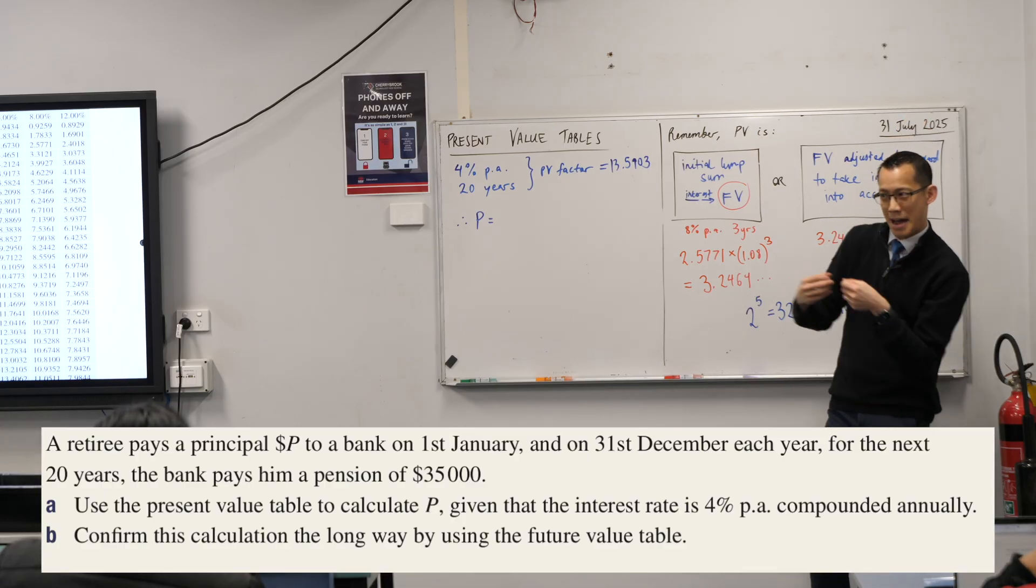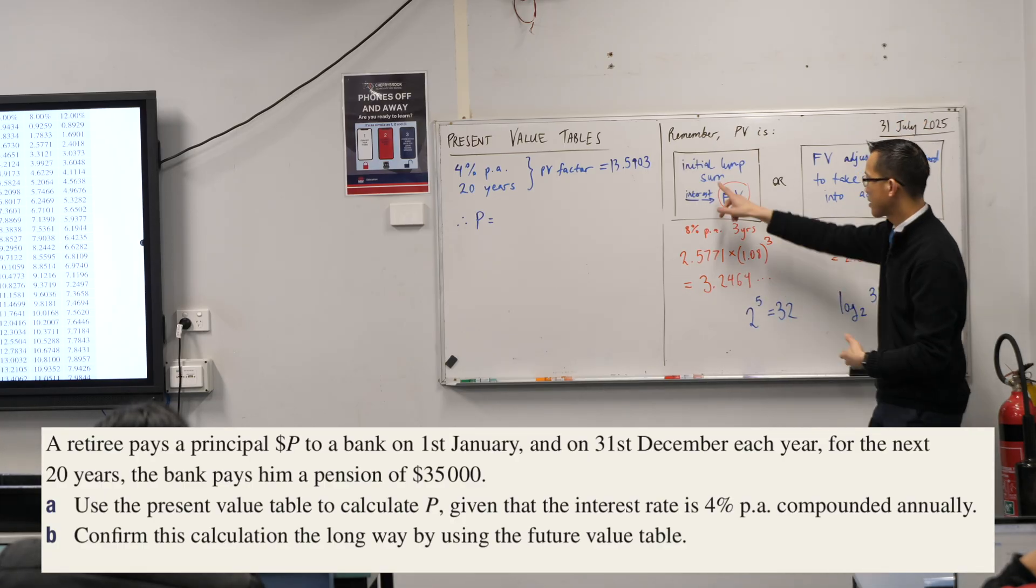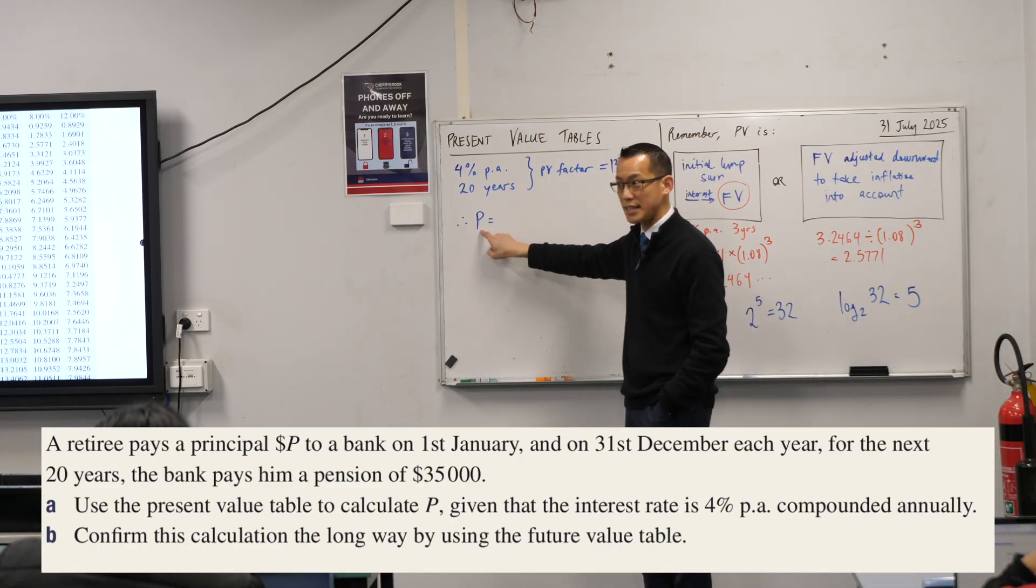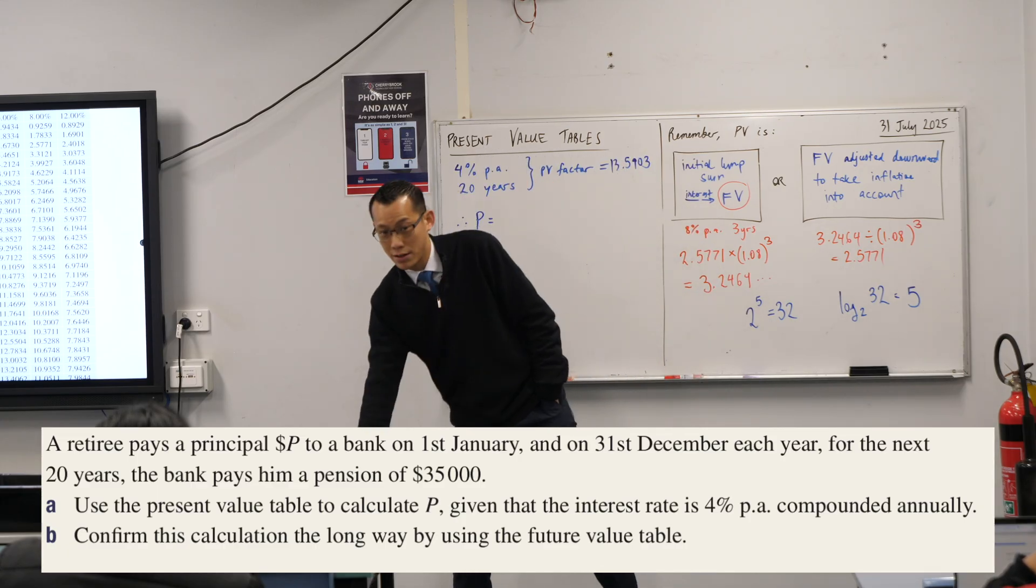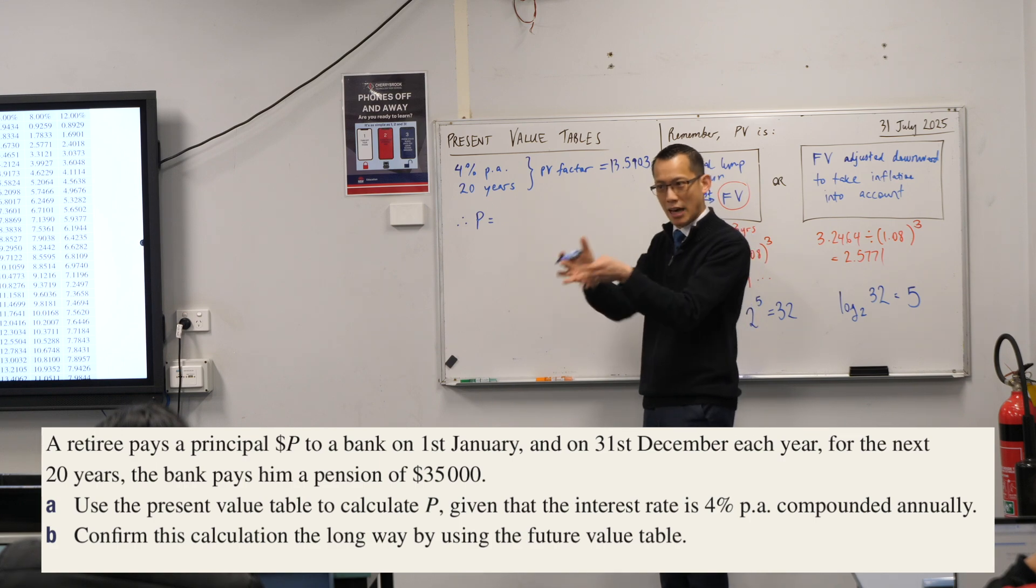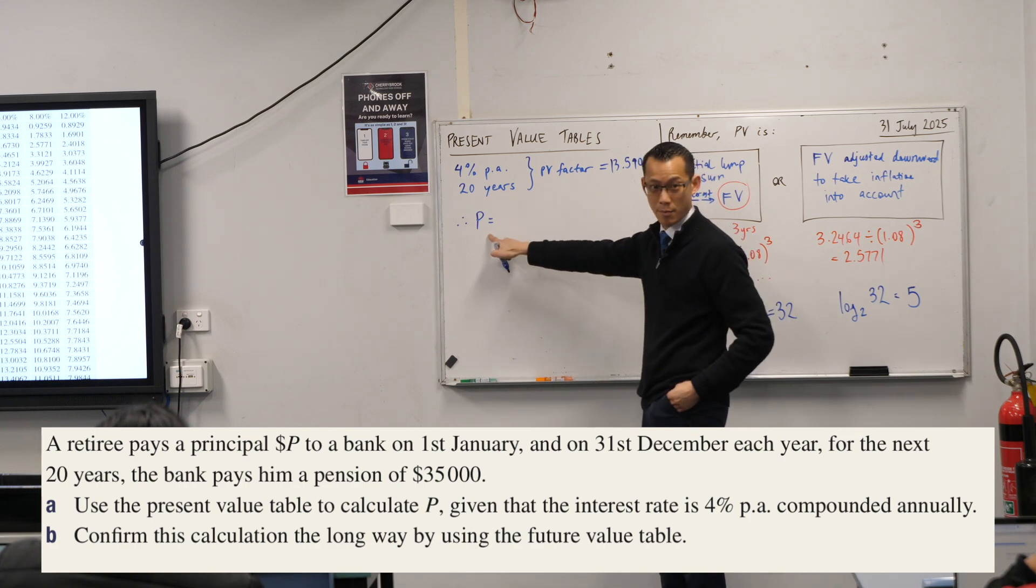But the thing is, we keep grabbing stuff out of it, but nonetheless, that's what the initial lump sum is. So, P, the principle in this case, this is the present value that I'm trying to work out. The hardest part is, what on earth is the present value in this question? The principle goes in like today, so that's why it's the present value.